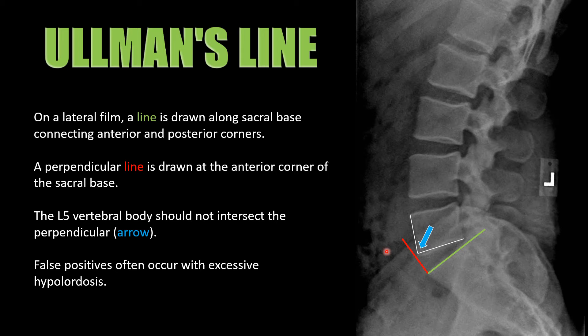With Ullmann's line, you look at the anterior aspect of the L5 vertebral body, draw a perpendicular with the sacral base, and see if the L5 anterior inferior corner has gone anterior to that perpendicular. This can be helpful, but in situations where the patient is extremely hypolordotic or hyperlordotic, you can get false positives or false negatives. Personally, I would stick to Meyerding's and George's.